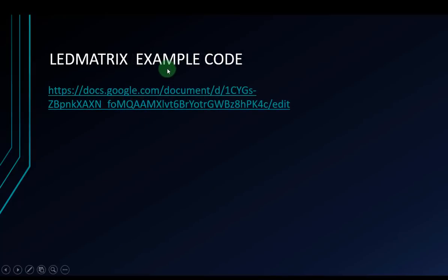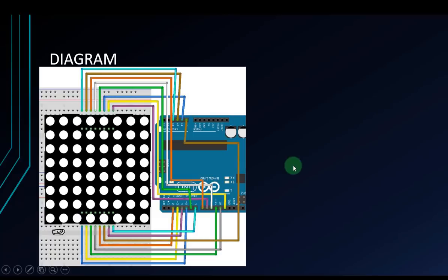This is the LED matrix example code. You can come here to copy all the code and paste it into your Arduino sketch, then upload it to your Arduino. This is the wiring diagram. I don't put the row and column names here, but you should connect according to this diagram. If it doesn't run, you may need to rotate the LED matrix around.